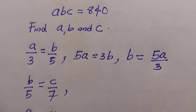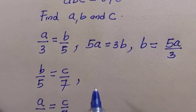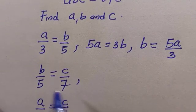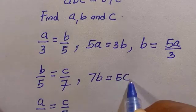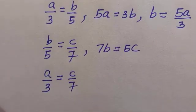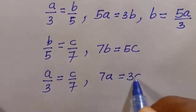And for the second one, let's say we cross multiply, we have 7b equals 5c. So I'll just leave this like this. And for the last one we're going to cross multiply as well. We have 7a equals 3c.